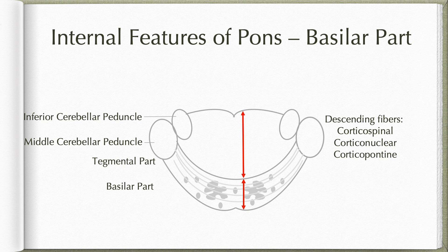The third group of fibers are the corticopontine fibers. They arrive from different lobes of the cortex, hence they are named as frontopontine, paritopontine, temporopontine, and occipitopontine fibers. They arise mainly from premotor, somatosensory, and posterior parietal cortex, also from the extrastriate part of the visual cortex and from the cingulate cortex. Comparatively fewer fibers are there from the prefrontal cortex, temporal cortex, or the striate part of the visual cortex.